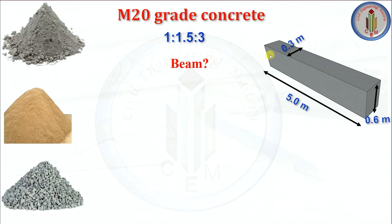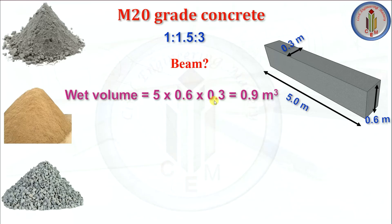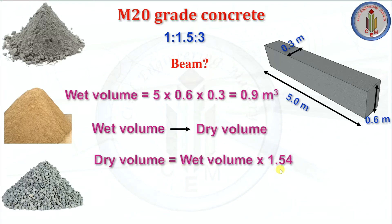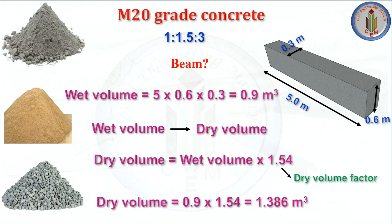Next, let us calculate for beam. Beam is a horizontal structural member. The length of the beam is 5 meter, width is 0.3 meter and depth is 0.6 meter. Volume of the beam equals 5 multiplied by 0.6 multiplied by 0.3, giving a wet volume of 0.9 meter cube. Converting to dry volume by multiplying by 1.54, we get 1.386 meter cube as the dry volume.